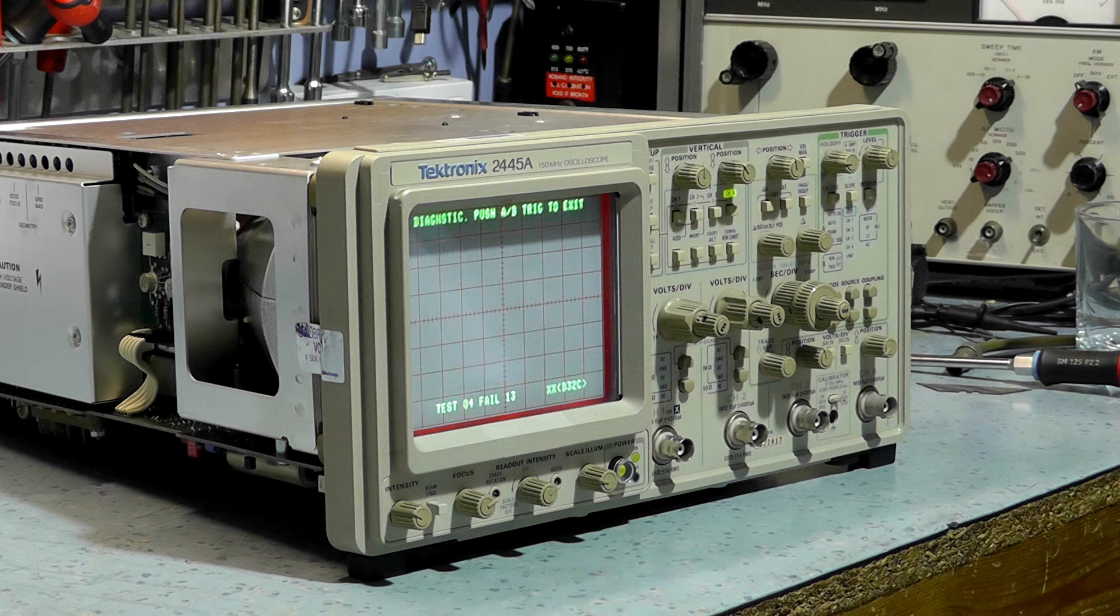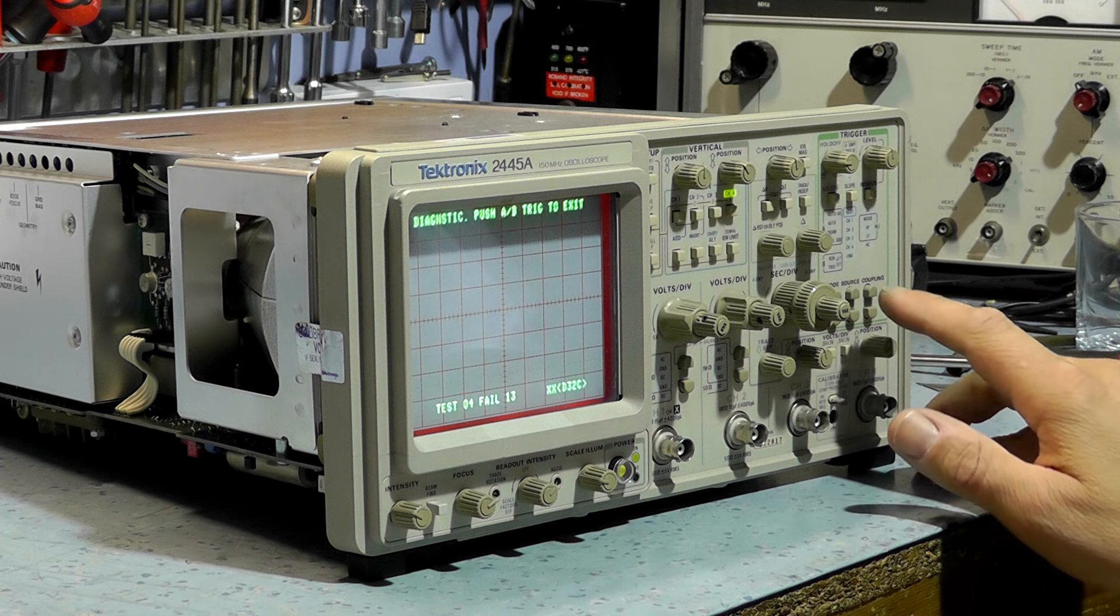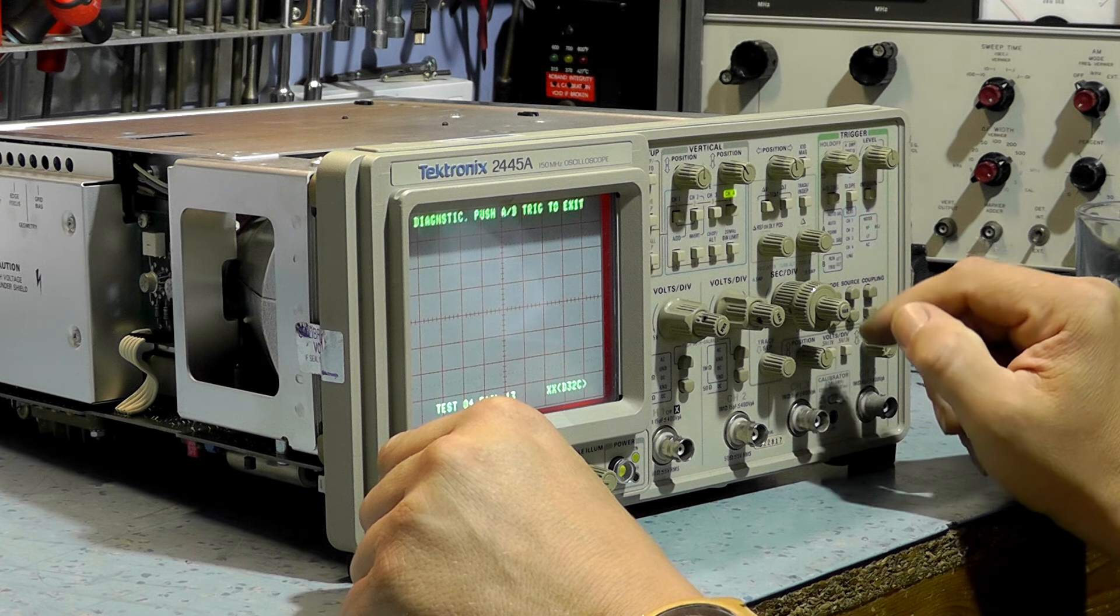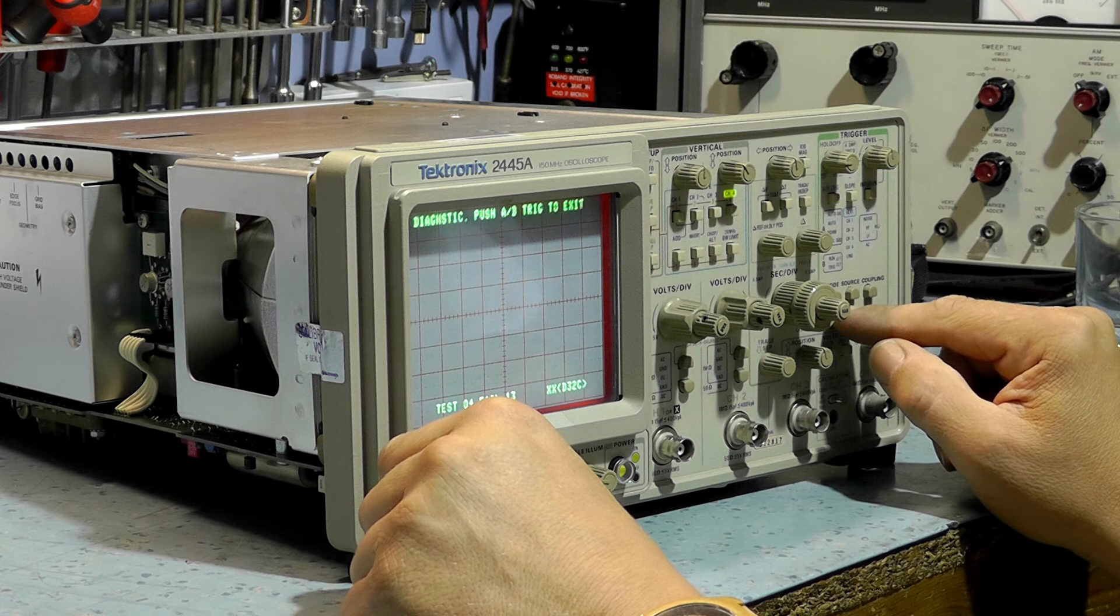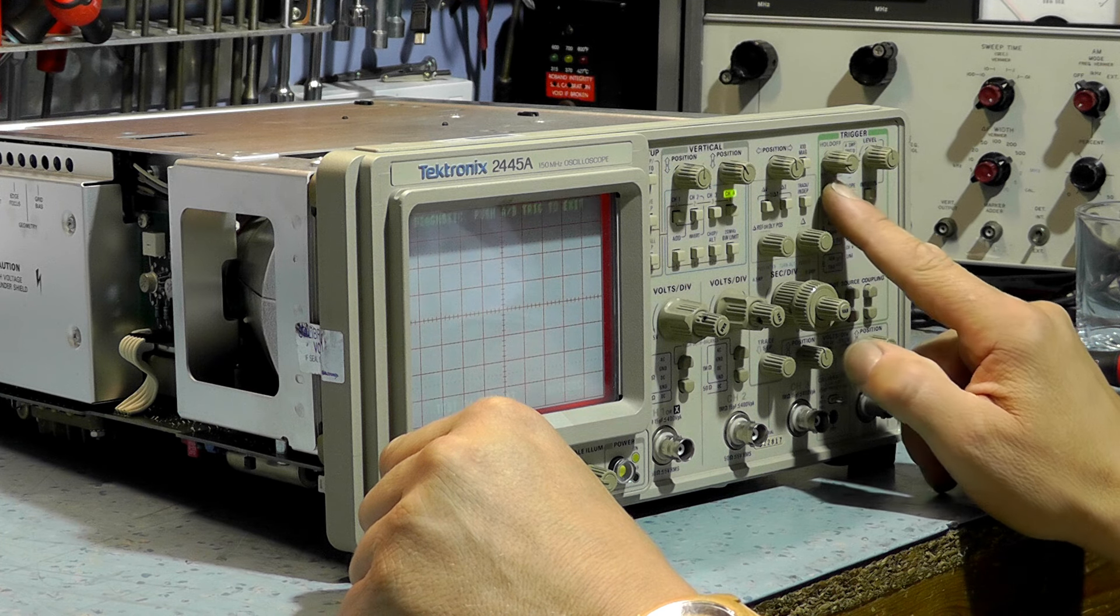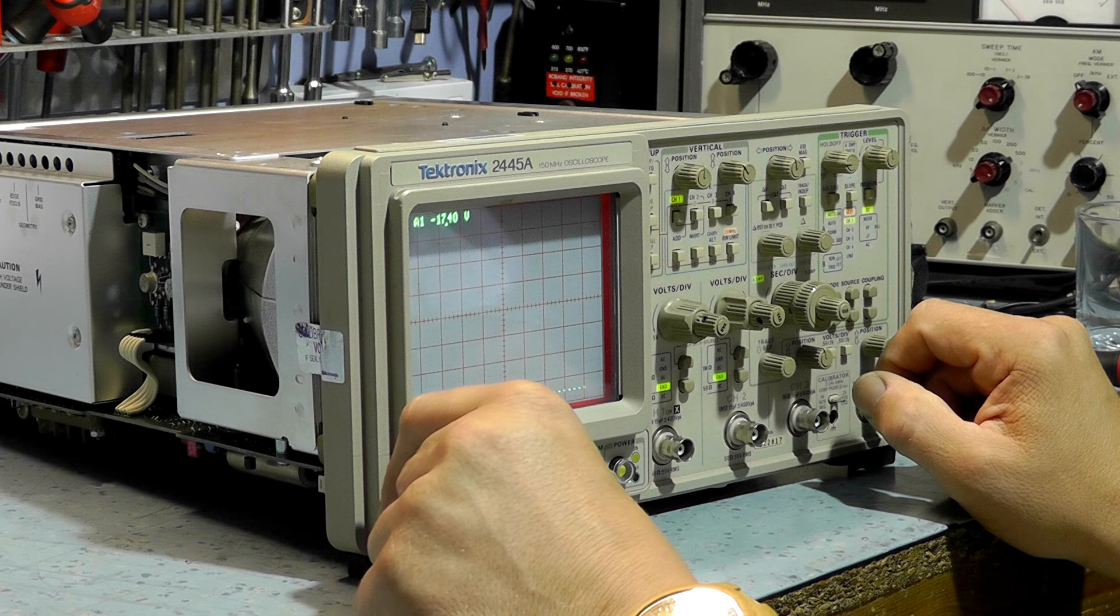Fan noise. Test phone 4 fail. Diagnostic push A, B, trig to exit. There's A, B, trig. It'll take you an hour to find where everything is. Okay, so it's failed at some form of calibration.